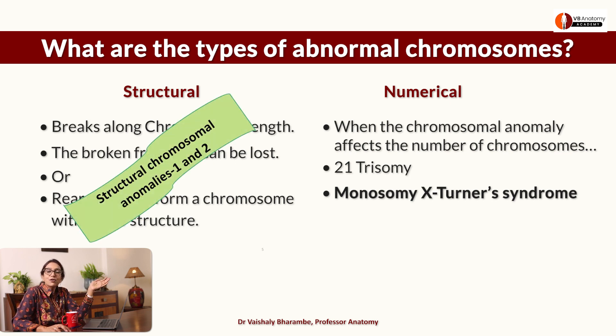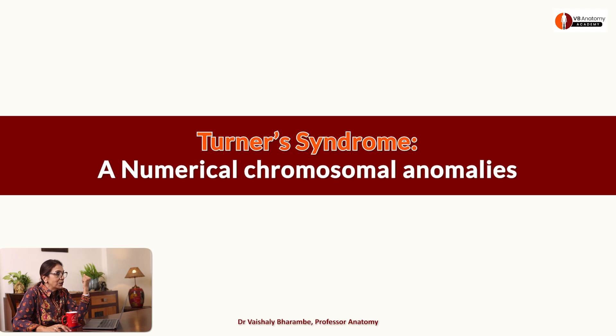I've already taken a series of lectures on structural chromosomal anomalies, the link for which is in the description. Today we're going to talk about Turner syndrome, which is a type of numerical chromosomal abnormality. If there is a change in the shape of the chromosome — a bit lost or attached — that is structural. But if the entire chromosome number is increased or decreased, we call it numerical. Turner syndrome is one such numerical chromosomal abnormality we will learn today.